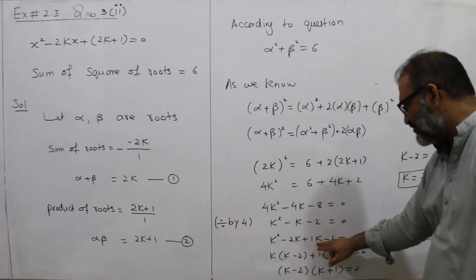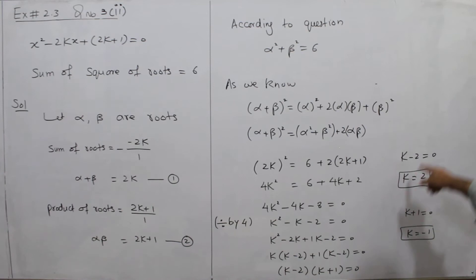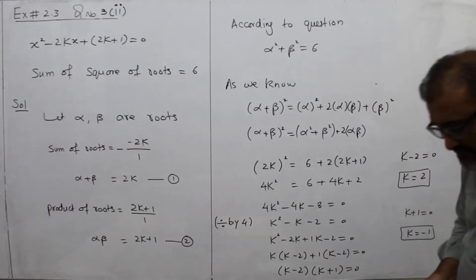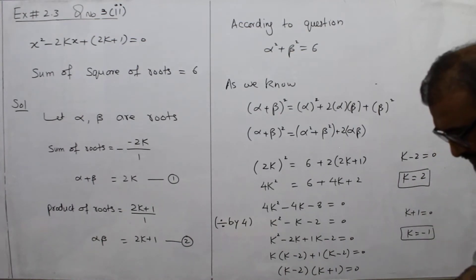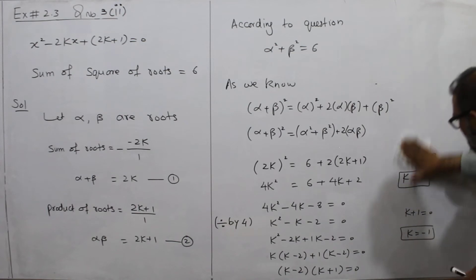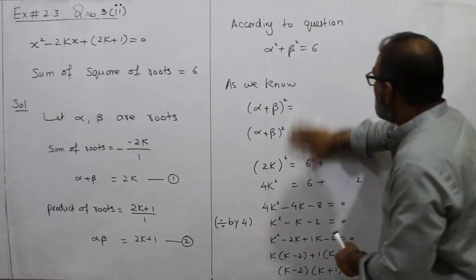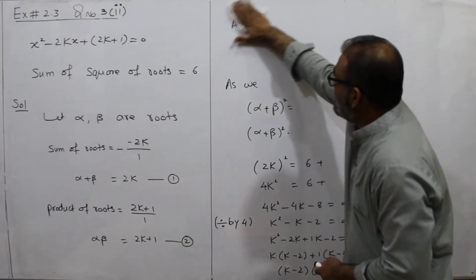This gives minus 2 and plus 1 for k. Ultimately we have two answers. This question has also been completed. Let's move on to this exercise.